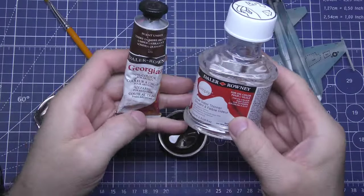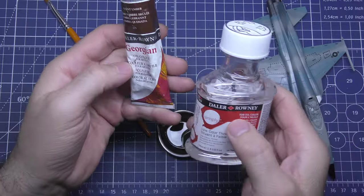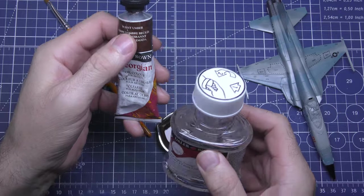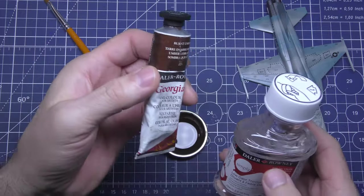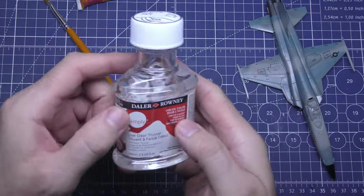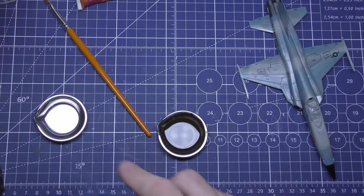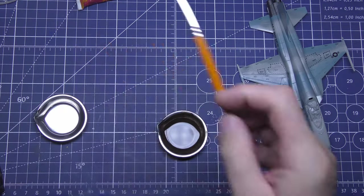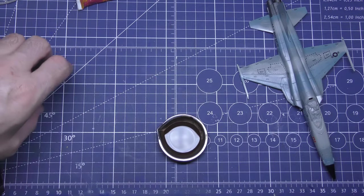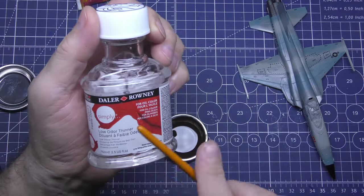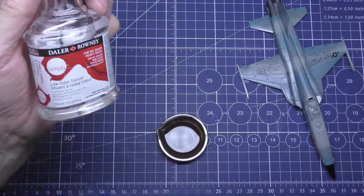I've used these two—some Daler Rowney burnt umber. Just about any good brand will do it. And some Daler Rowney low odor thinner here as well, just so it doesn't stink as much. But any kind of turps will do or a thinner. It can't be a normal acrylic thinner though because it's got to be one for oils.